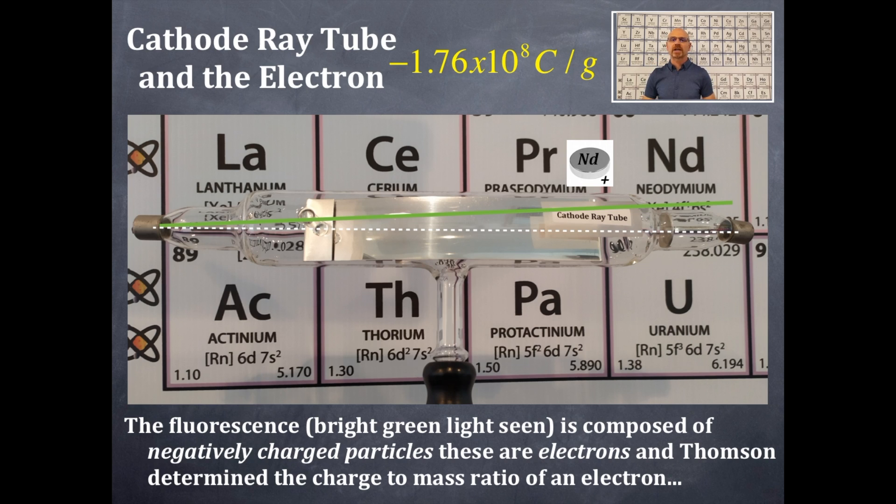Now, your chemistry professor, teacher, instructor will probably not show you a cathode ray tube actually in action because it does emit x-rays and everybody would have to be wearing lead aprons. And it's really hard to see through lead glasses as well.